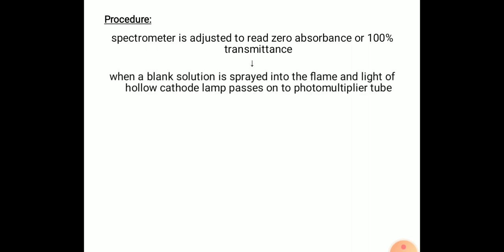Next we will study the procedure of this experiment. First, the spectrometer is adjusted to read zero absorbance or 100% transmittance. When a blank solution is sprayed into the flame and light of hollow cathode lamp passes on to photomultiplier tube. So first you are supposed to spray the blank solution into that flame which passes through hollow cathode lamp.